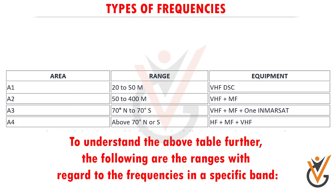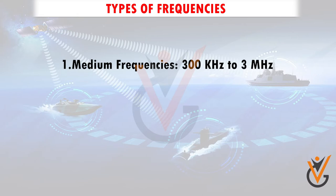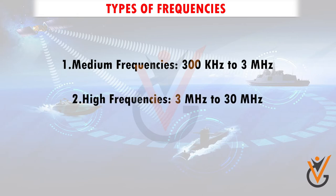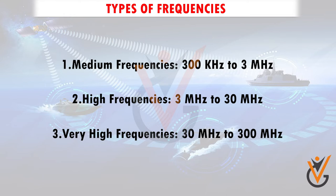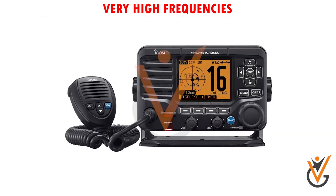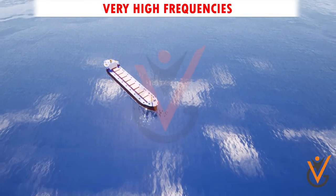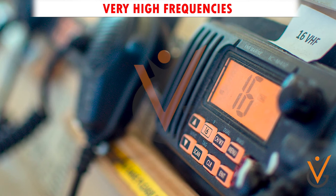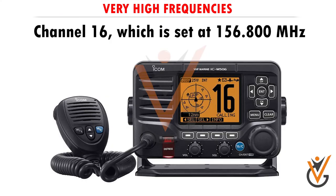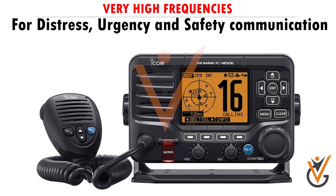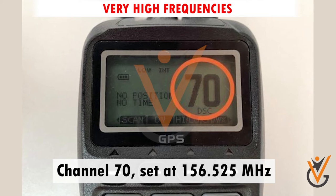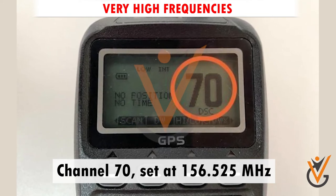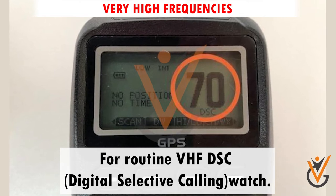To understand the above table further, the following are the ranges with regard to the frequencies in a specific band. Medium frequencies: 300 kHz to 3 MHz. High frequencies: 3 MHz to 30 MHz. Very high frequencies (VHF): 30 MHz to 300 MHz. For the purposes of maritime communication, the range of 156 MHz to 174 MHz is allocated. Channel 16, set at 156.800 MHz, is for distress, urgency and safety communication. Channel 70, set at 156.525 MHz, is for routine VHF DSC — digital selective calling — watch.